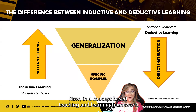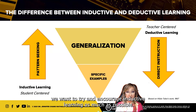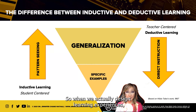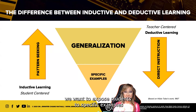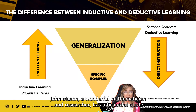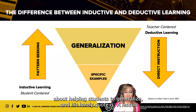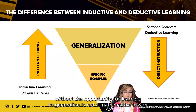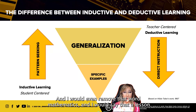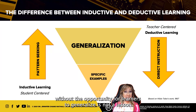In a concept-based teaching and learning framework, we want to try and encourage inductive learning as much as possible. When we actually design learning experiences, we want to expose students to specific examples and then allow them to generalize. The great John Mason, a wonderful mathematician and researcher, has a beautiful quote: 'A lesson without the opportunity for learners to generalize is not a mathematics lesson.' And I would even remove the word mathematics — a lesson without the opportunity for learners to generalize is not a lesson.